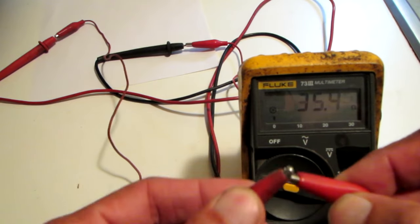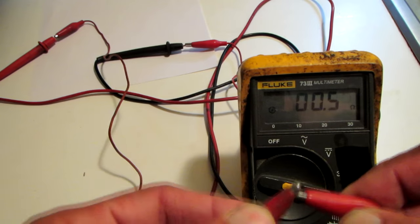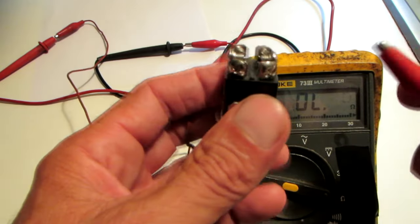I have alligator clips hooked to my meter leads. Press them together and make sure my meter is working. Reading point four ohms. Everything is good there.